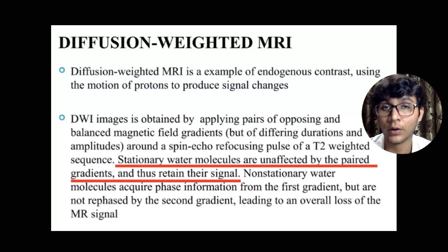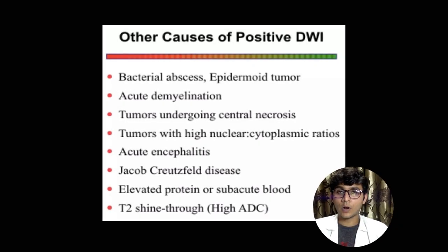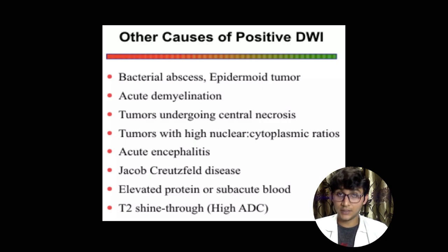Because of the stationary water property, DWI not only helps in acute stroke but also in conditions like brain abscess, acute demyelination, tumors with high nuclear-to-cytoplasmic ratios, Creutzfeldt-Jakob disease, and more. Pause the video to read through all the other pathologies that DWI helps diagnose.